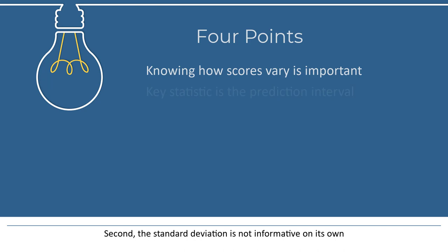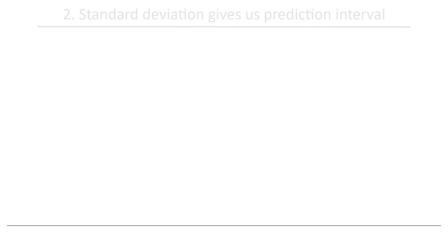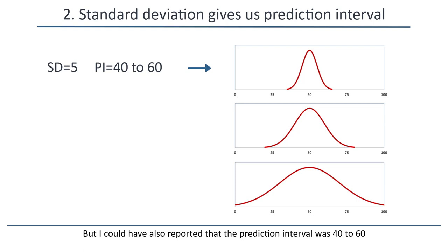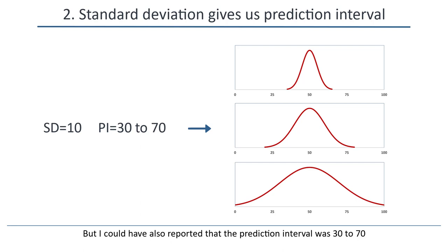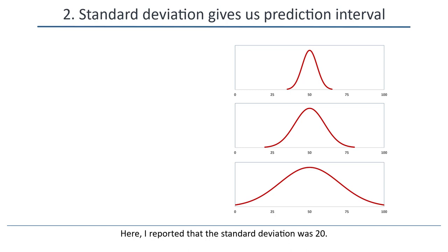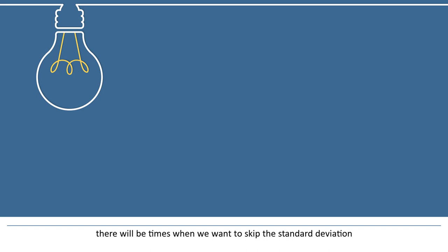Second, the standard deviation is not informative on its own. Rather, it's informative because we know how to take the standard deviation and use it to compute the prediction interval. Here I reported that the standard deviation was 5, but I could have also reported that the prediction interval was 40 to 60. Here I reported that the standard deviation was 10, but I could have also reported that the prediction interval was 30 to 70. The reason I mention this is that when we get to meta-analysis, there will be times when we want to skip the standard deviation and simply report the prediction interval.